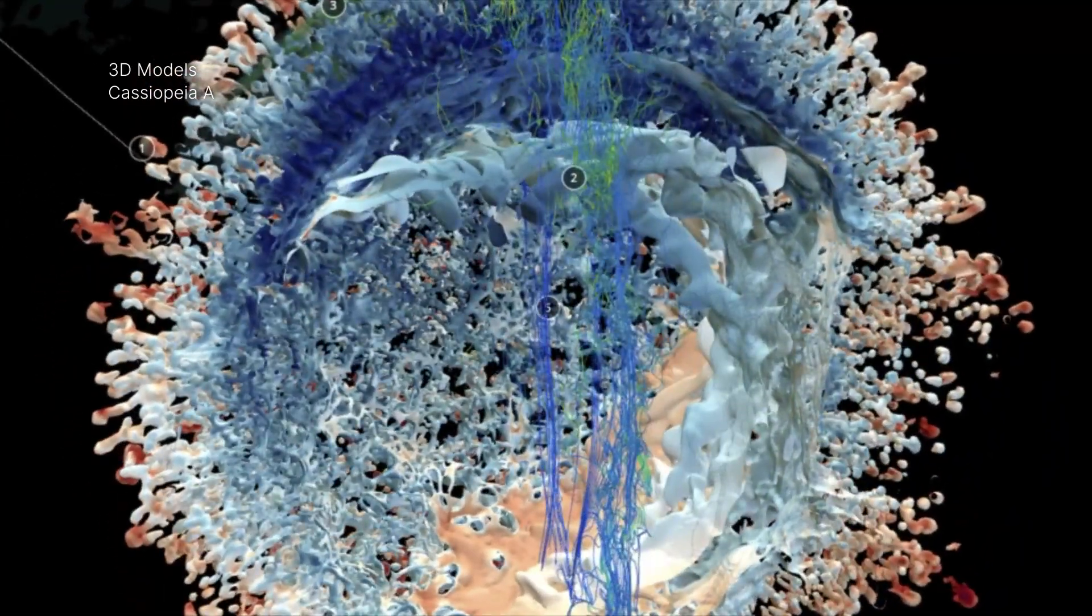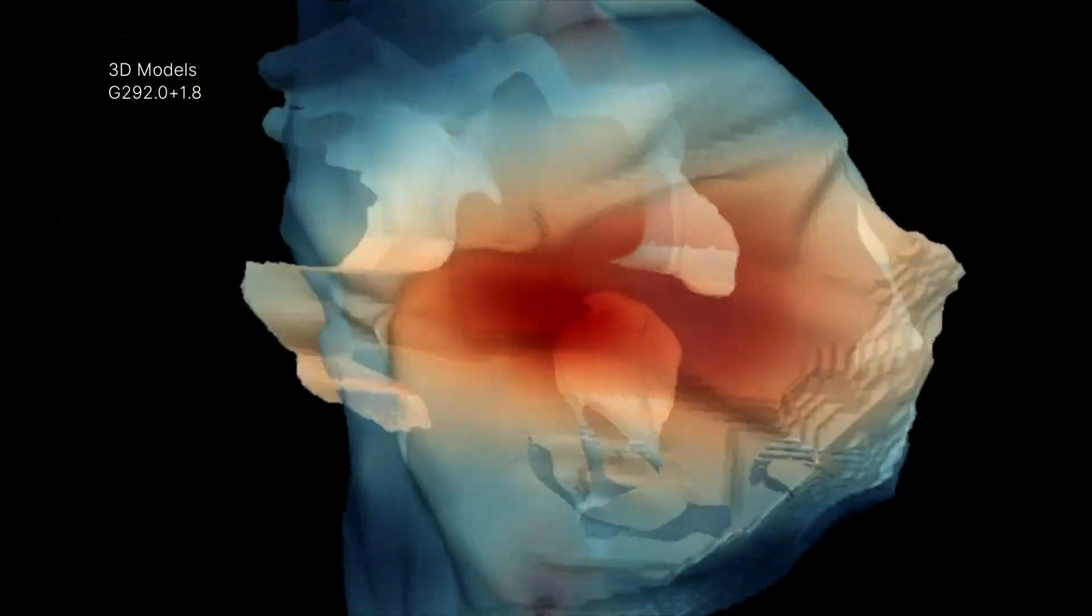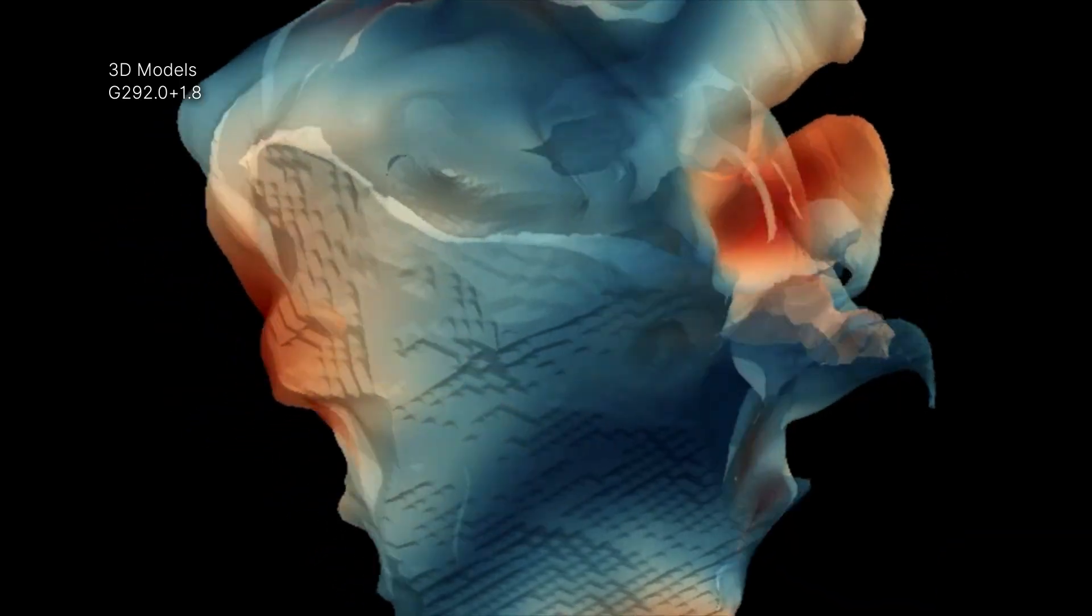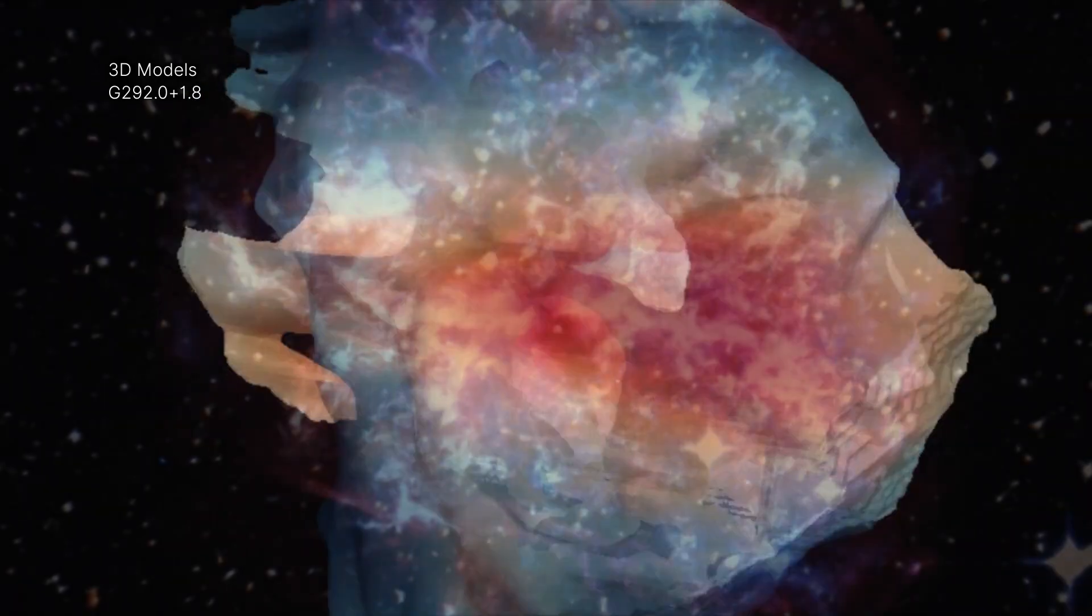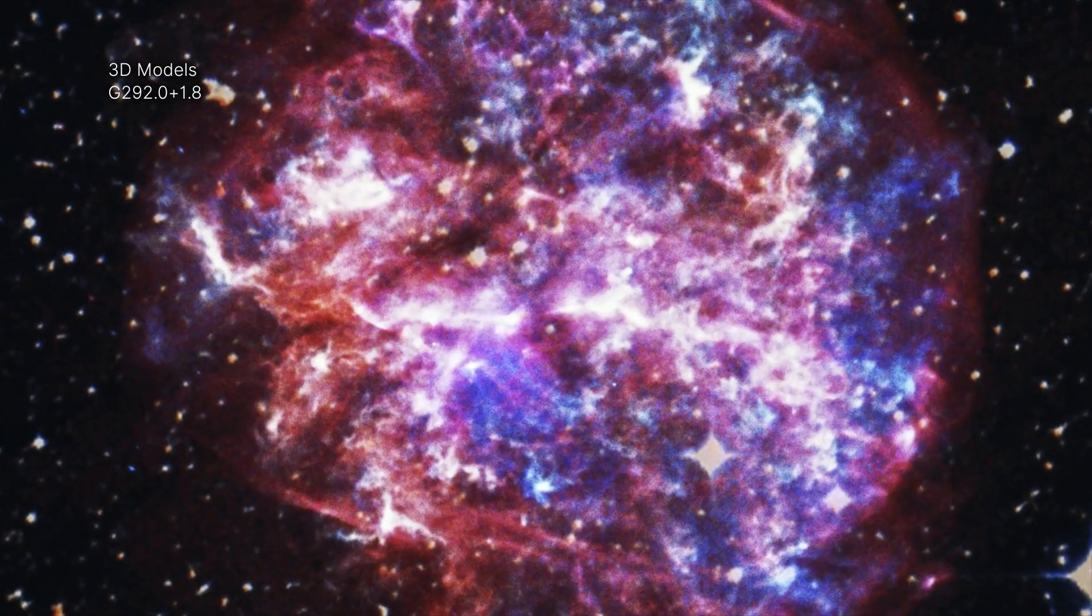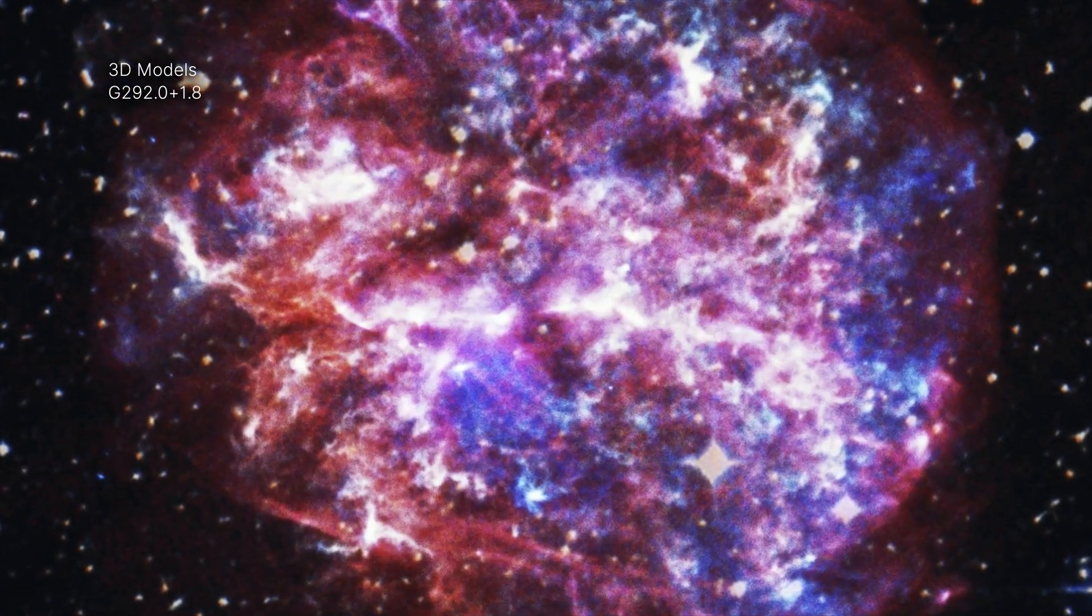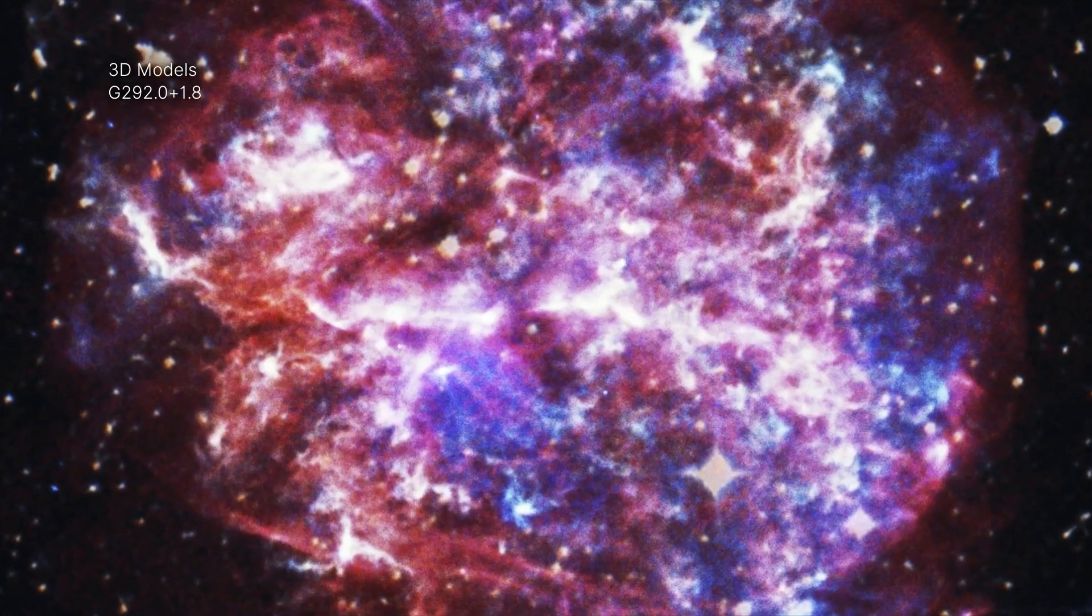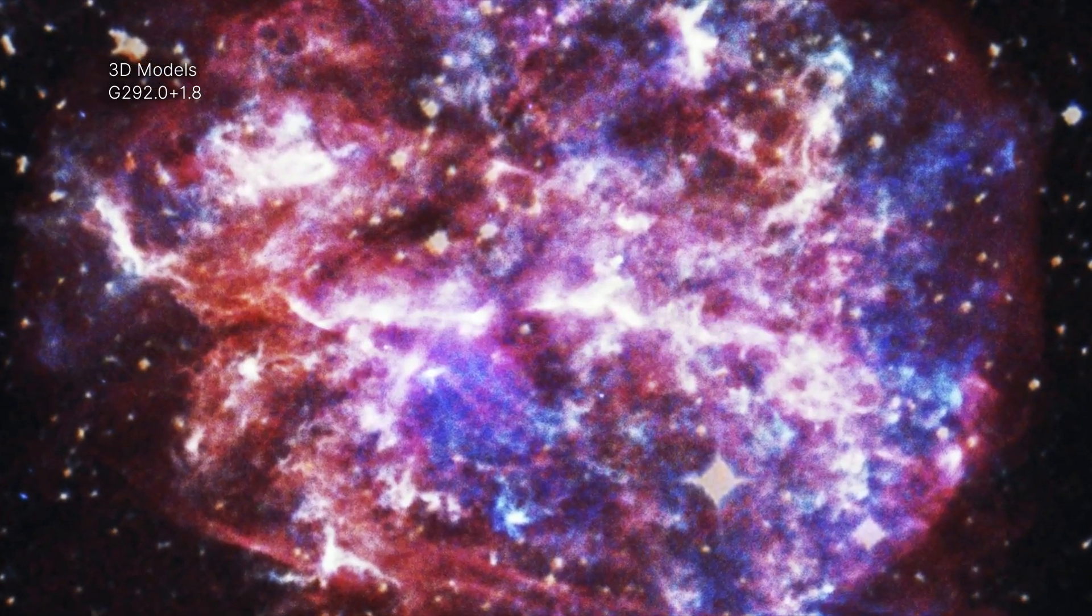By creating a 3D model of the G292 system, astronomers have been able to examine the asymmetrical shape of the remnant that can be explained by a reverse shockwave moving back toward the original explosion. This helps them better understand this rare type of supernova explosion that contains large amounts of oxygen.